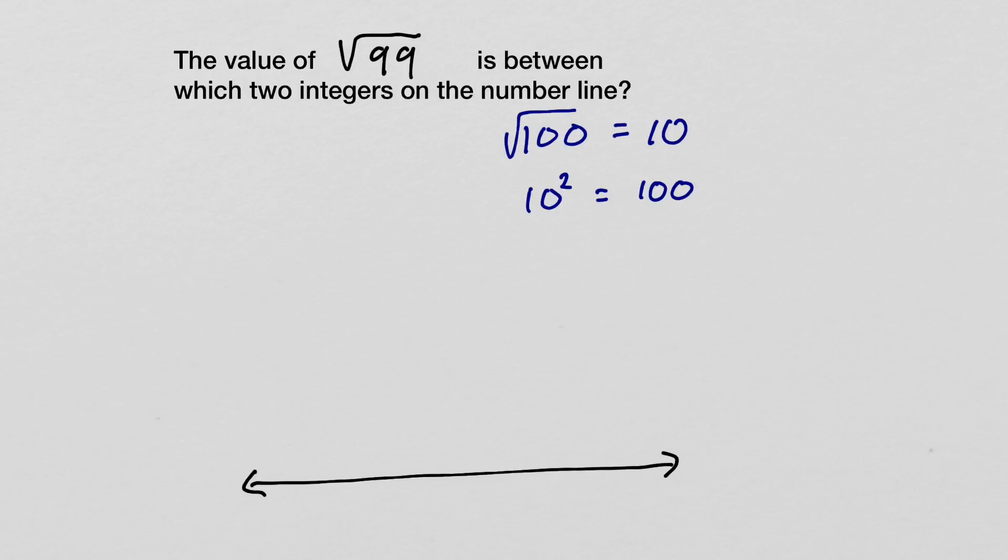So if 100 is too big, then we know that the numbers must fall between 9 and 10. Now we can test that out if you like. So 9 times 9 gives us 81, so the square root of 81 is going to give us 9.